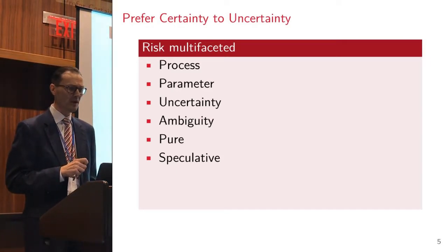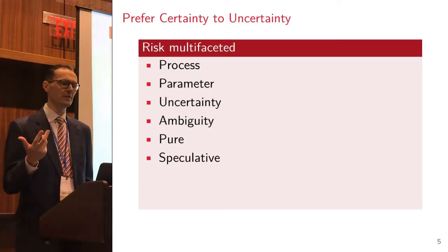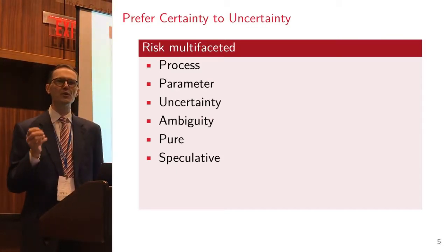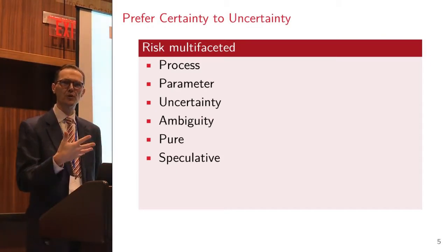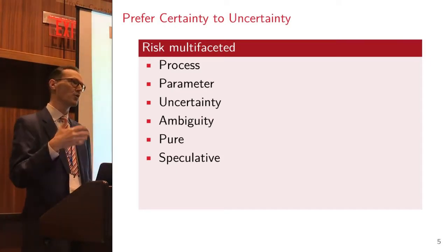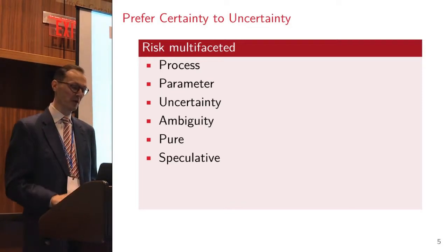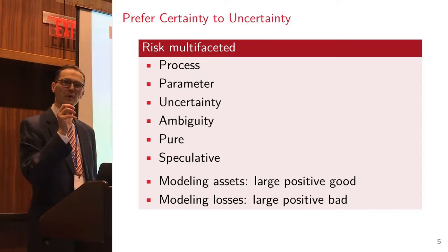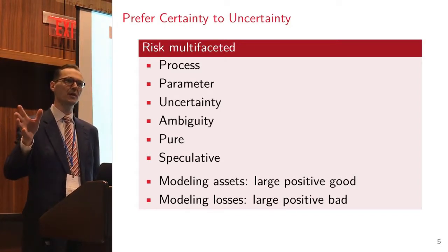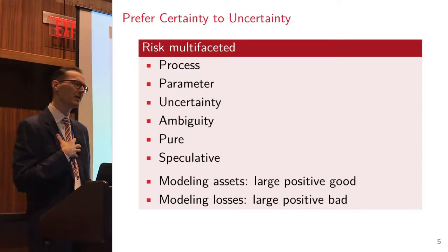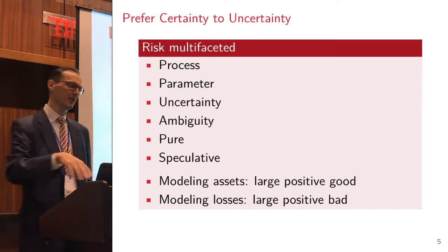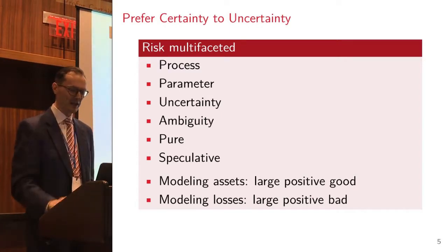On the prefer certainty to uncertainty piece, risk is such a slippery character. You've got process risk and parameter risk, uncertainty and ambiguity, pure risks which are insurance risks where I can either lose something or be at an equal point, or speculative risk which is asset risk where I could go up or down. When you model an asset, you typically regard the asset value as positive so bigger is better. As actuaries, we tend to model losses as positive so bigger is worse.